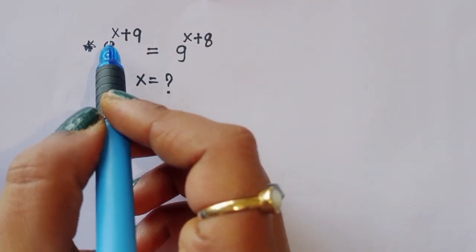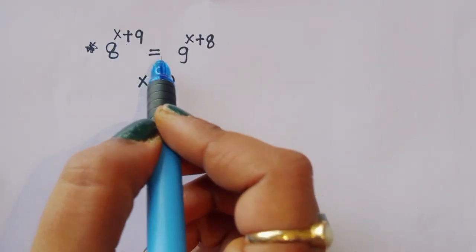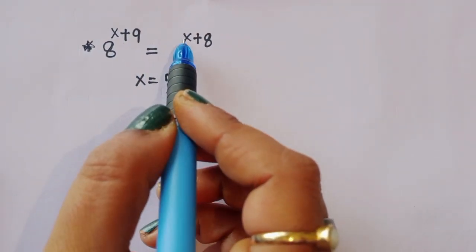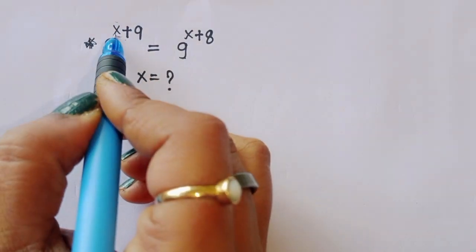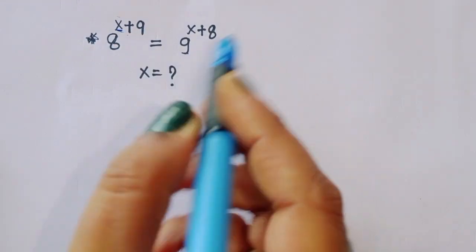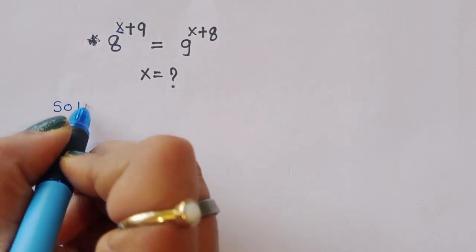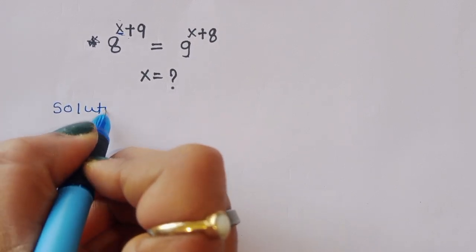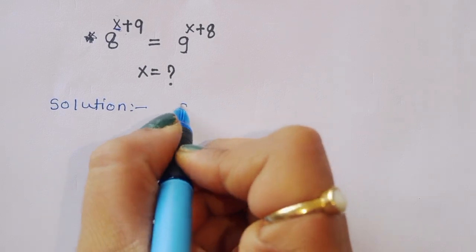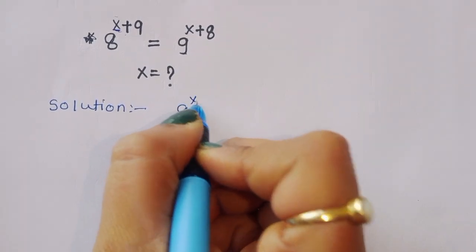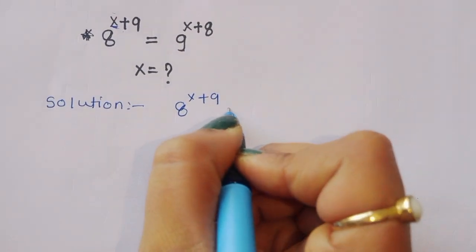The question is: given 8 power (x+9) is equal to 9 power (x+8), we have to find out the value of x. Let's see the solution.